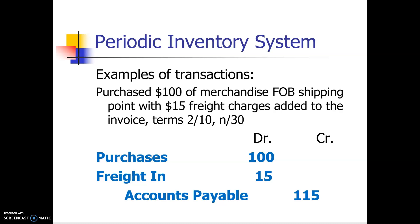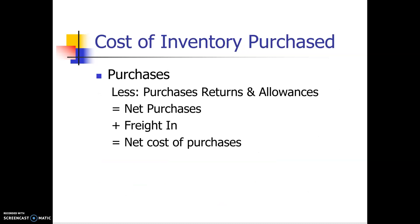Just to remind you how purchases work: purchases is the cost of the merchandise itself. We subtract any merchandise we returned as purchase returns and allowances — that gives us our net purchases. Then we add any freight charges we paid, giving us the net cost of purchases. Under the periodic system, we have separate accounts for purchases, purchase returns and allowances, and freight in.